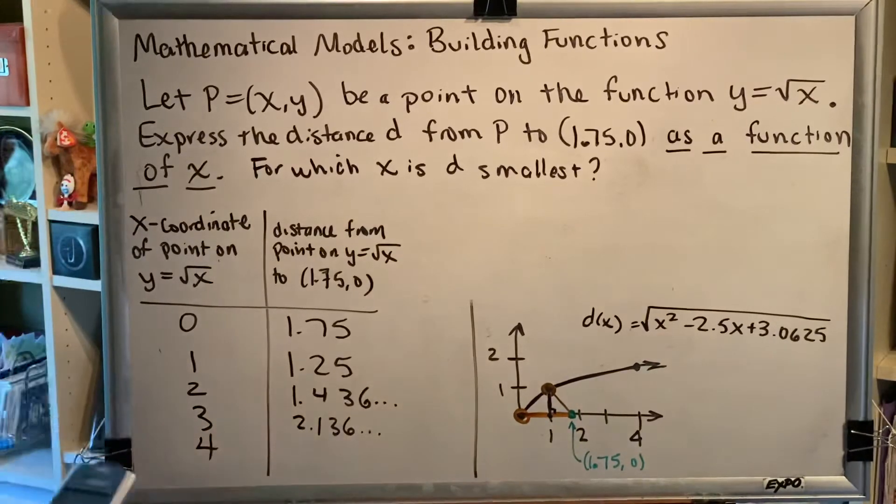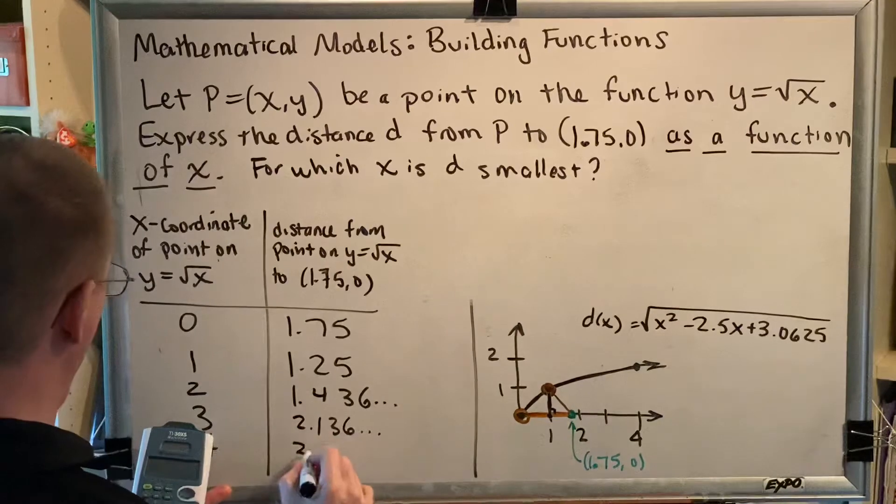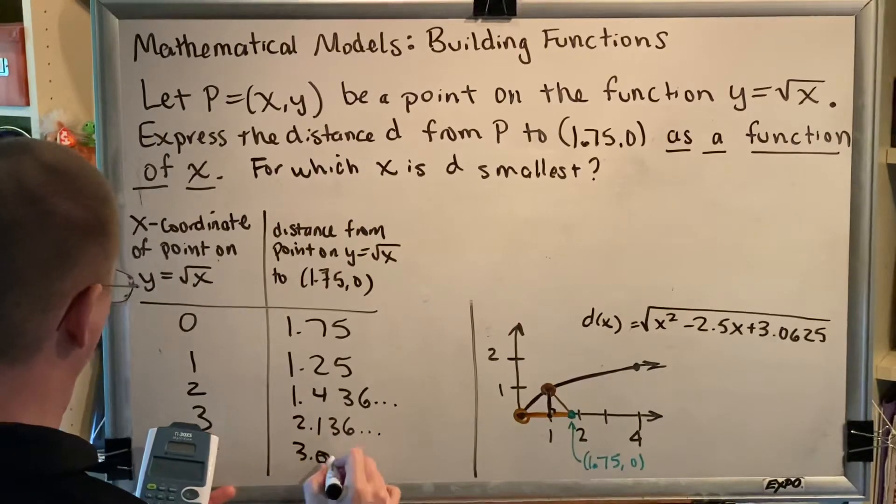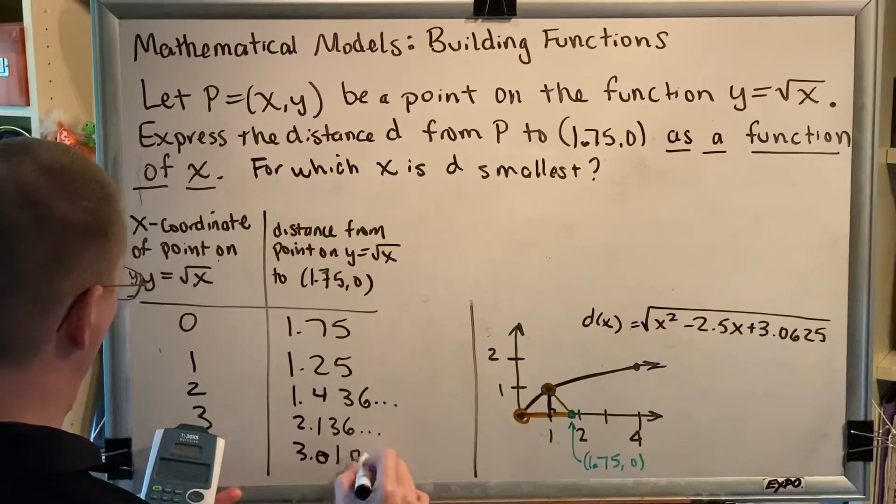And one more, we'll let x be 4. Plugging that in, I get that the distance is 3.010.